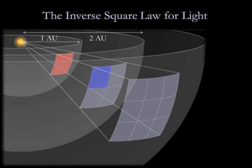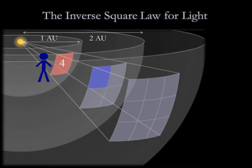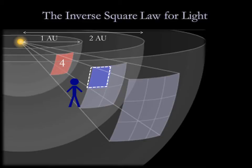Consider this figure. The same total amount of light must pass through each imaginary sphere surrounding the star. Pretend you're standing on the first sphere. You draw a square meter on its surface and you count the number of photons that pass through your square each second. Let's say you measure 4 photons. Now move to the sphere that is twice as far away and draw a square the same size. If you count the number of photons that pass through this square, you'll only count 1.